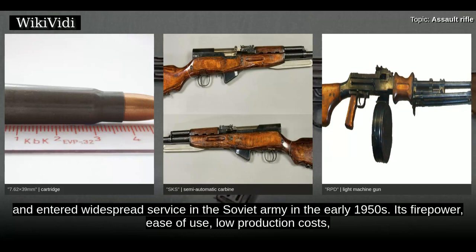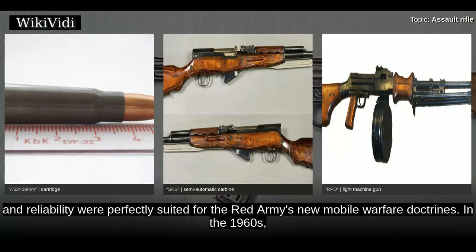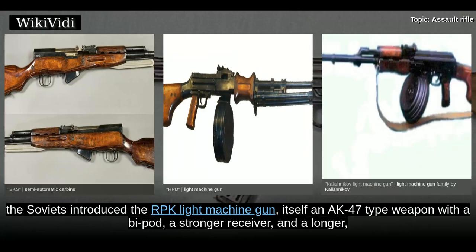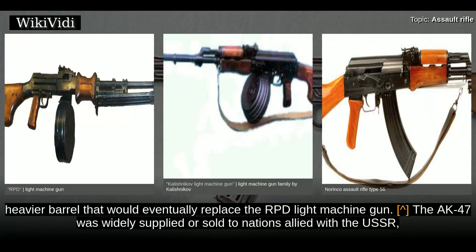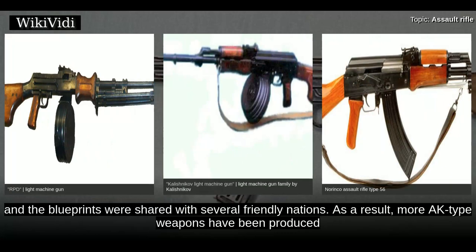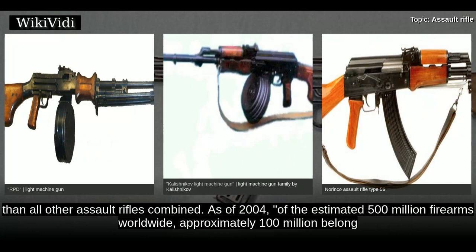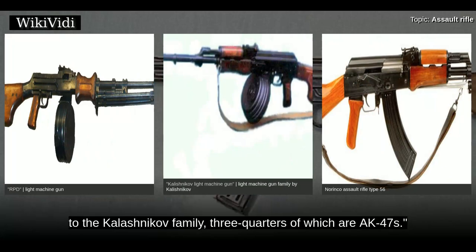Its firepower, ease of use, low production costs, and reliability were perfectly suited for the Red Army's new mobile warfare doctrines. In the 1960s, the Soviets introduced the RPK light machine gun, itself an AK-47 type weapon with a bipod, a stronger receiver, and a longer, heavier barrel that would eventually replace the RPD light machine gun. The AK-47 was widely supplied or sold to nations allied with the USSR, and the blueprints were shared with several friendly nations. As a result, more AK-type weapons have been produced than all other assault rifles combined. As of 2004, of the estimated 500 million firearms worldwide, approximately 100 million belong to the Kalashnikov family, three quarters of which are AK-47s.